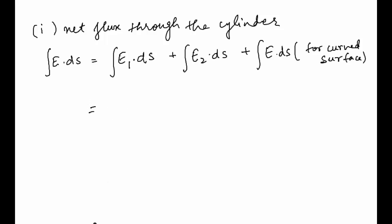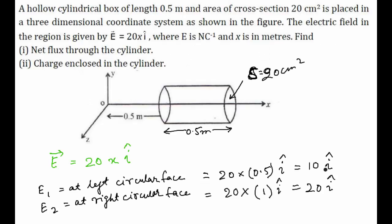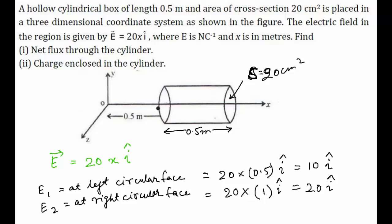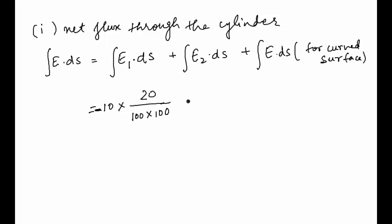So E₁ = 10 and E₂ = 20. E₁ = 10 × 20 cm² (converting to meter square by dividing by 100 × 100). Here its direction will be opposite, so a negative sign will be put.